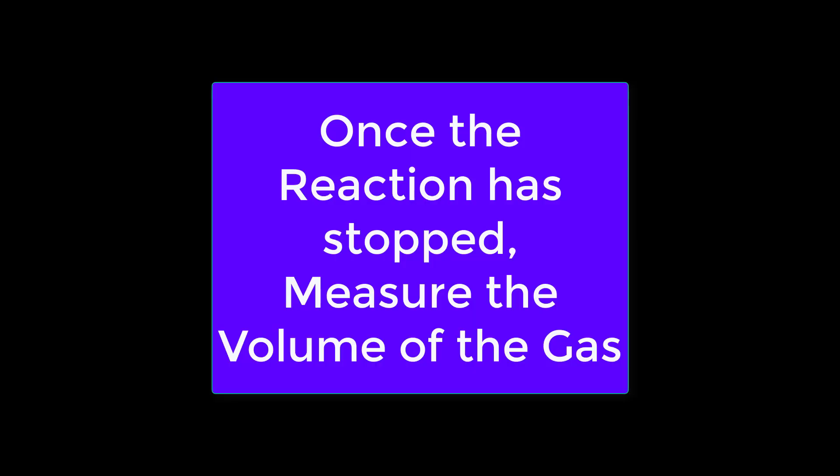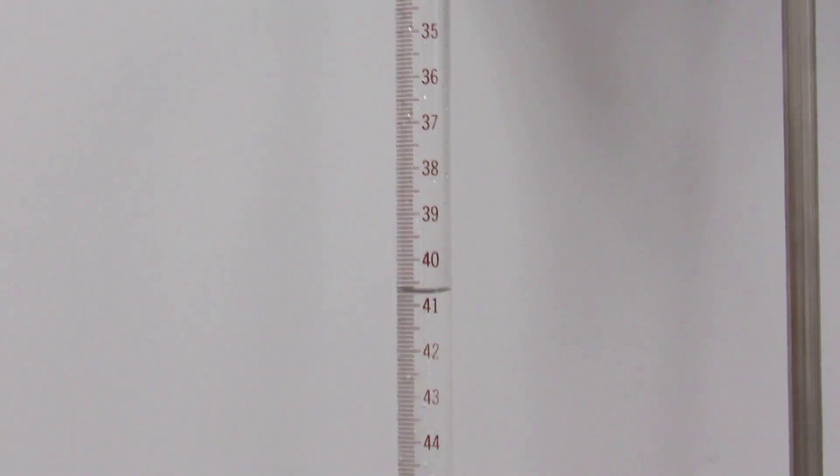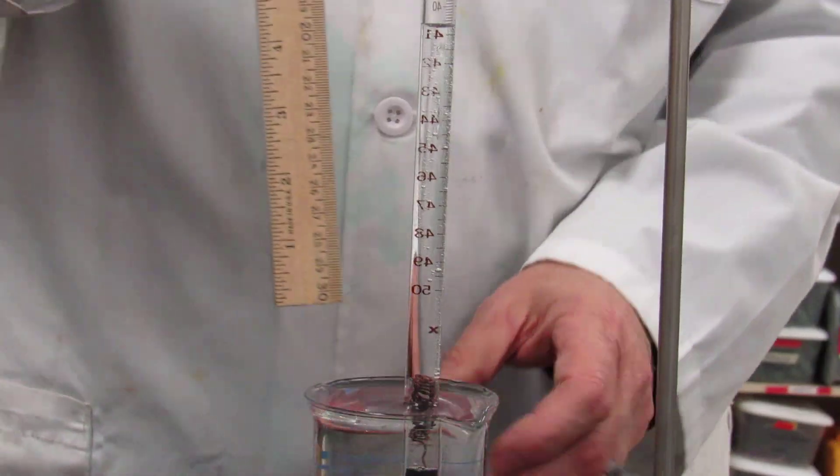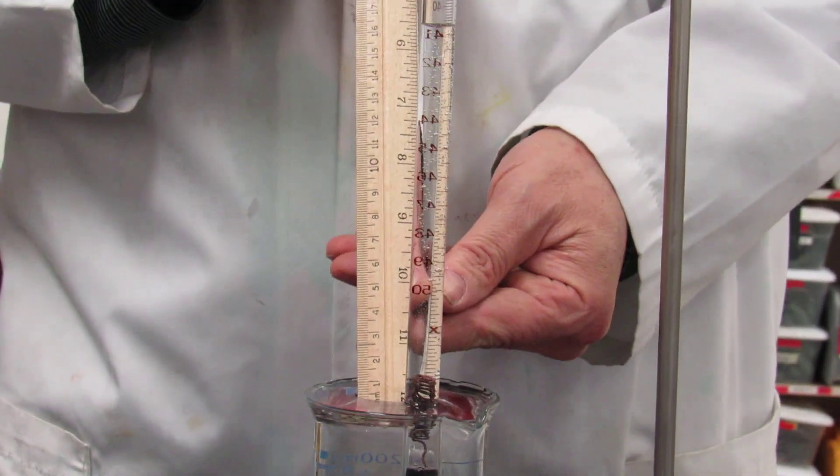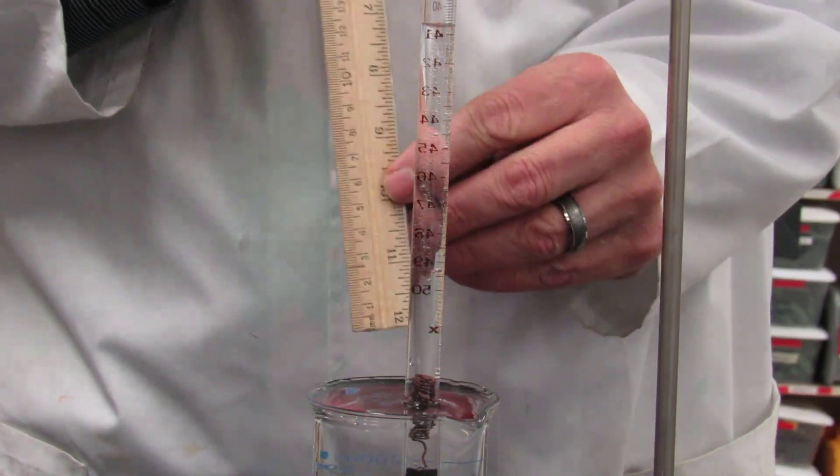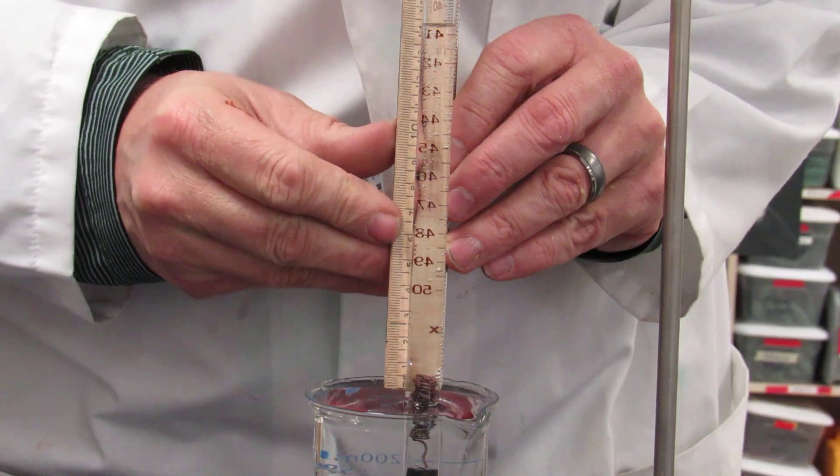Once the reaction is stopped, measure the volume. Use the eudiometer measuring from the top. And then finally, the last thing you need to do measurement-wise is measure the height of the water tower inside the tube. Notice that the level in the tube is not equal to the level in the beaker.